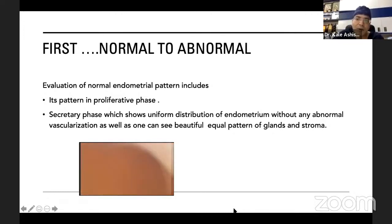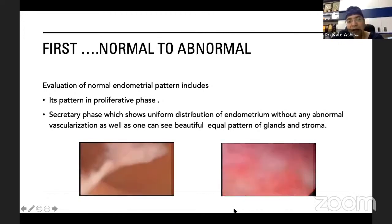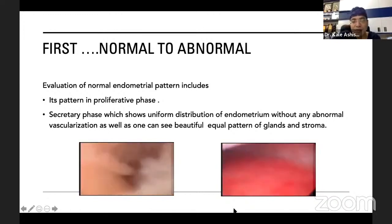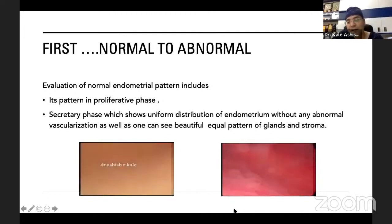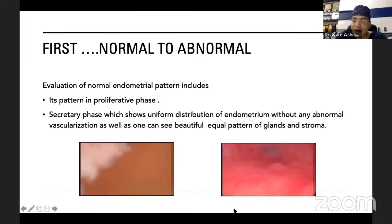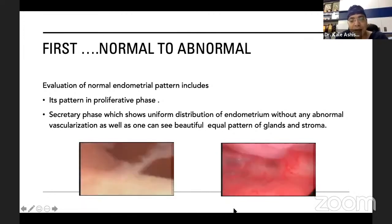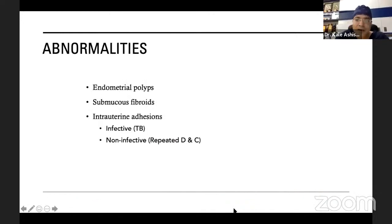In the proliferative phase the endometrium is thin and uniform. In the secretory phase you can see glands and polypoid structures on the surface — this is healthy endometrium. With contact hysteroscopy, going near to the endometrium at low intrauterine pressure, you can very clearly see the architecture of endometrial vessels and glands. Abnormalities you can identify include endometrial polyps, submucous fibroids, and intrauterine adhesions.